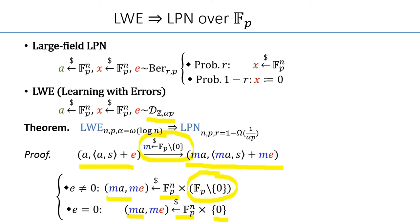And therefore, the right-hand sample after the transform is exactly the LPN sample over GF_P.